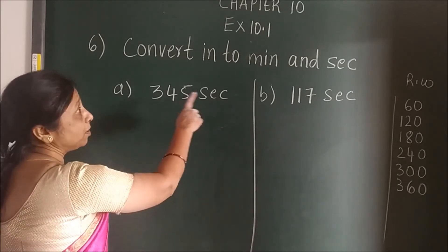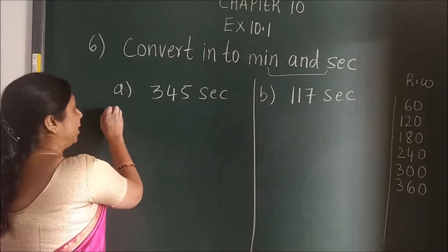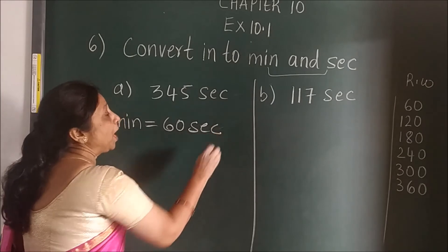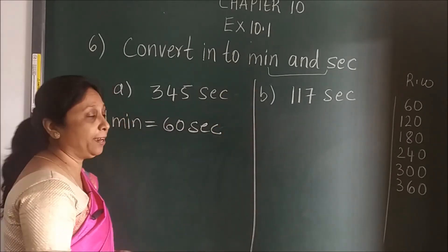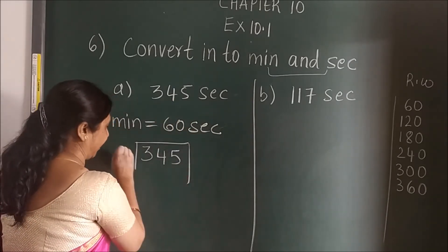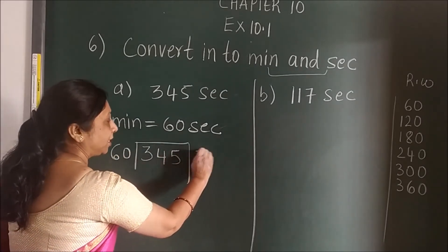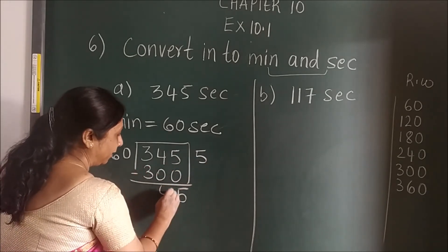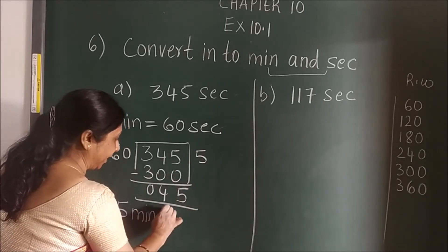Now convert into minutes and seconds. Again two things are there, so first write the relation: 1 minute is equal to 60 seconds. Two things to find, so you divide. Write the given number and divide by 60. Table of 60: 5 times 60 is 300. In this way, your answer is 5 minutes and 45 seconds.